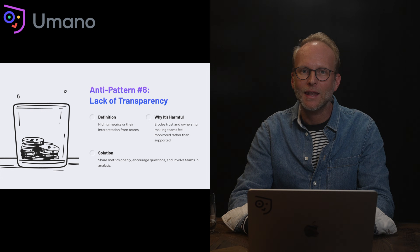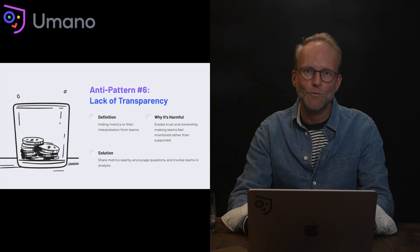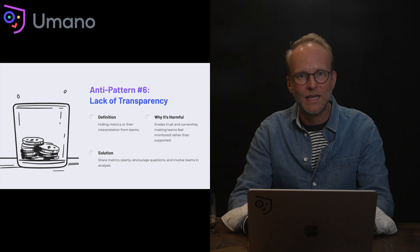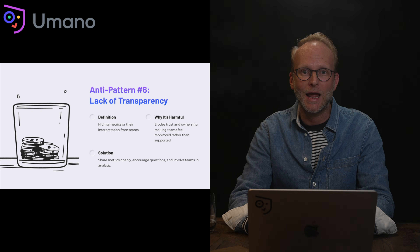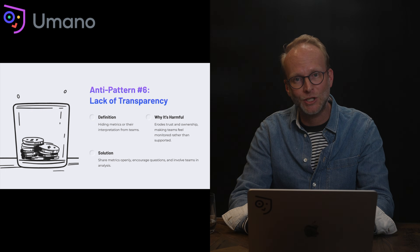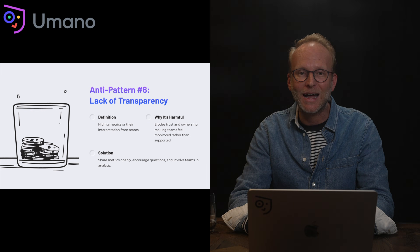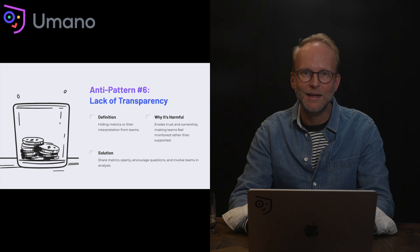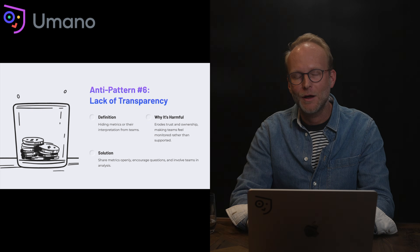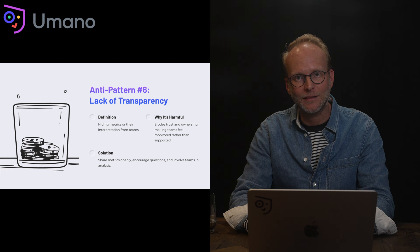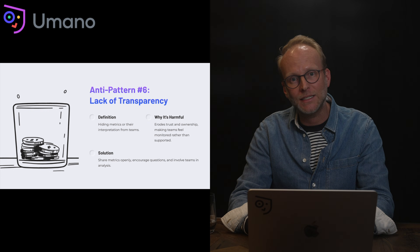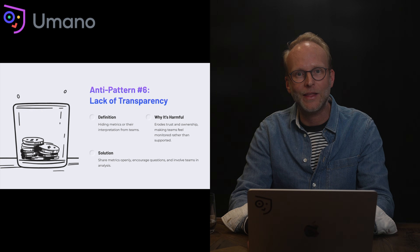Anti-pattern six: lack of transparency. This is a pattern of withholding information or hiding insights from the teams most affected by them. It's harmful simply because you're eroding trust and perpetuating the perception that teams are being spied upon and feeling monitored and unsupported. The solution is to be really open and transparent — provide teams with their information, be clear on who else has access to it, and build a culture of safety around how that information is disseminated.